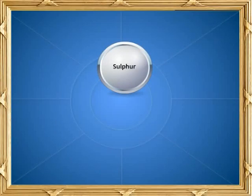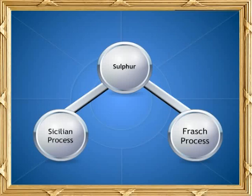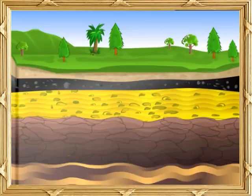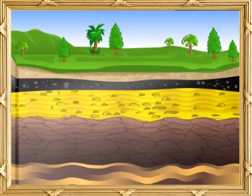Now let us see how sulfur is extracted from its ore. There are two ways to extract sulfur: one, the Sicilian process, and two, the Frasch process. The former is used in the case of low-depth deposits close to the Earth's surface, whereas the latter is used to extract underground deposits.